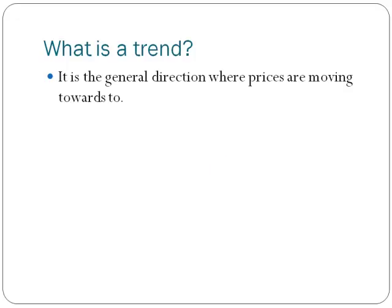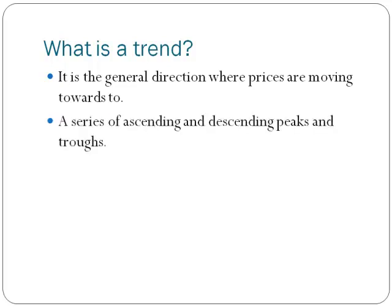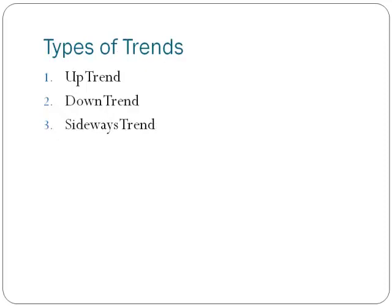What is a trend? It is the general direction where prices are moving towards. A trend is a series of ascending or descending peaks and troughs. There are three types of trends.